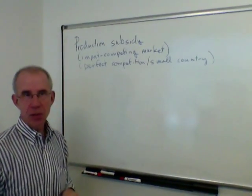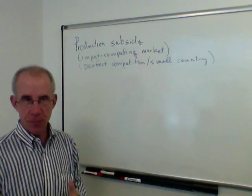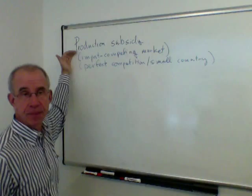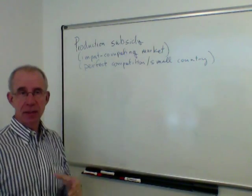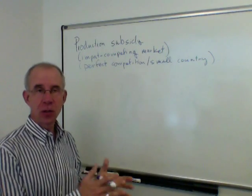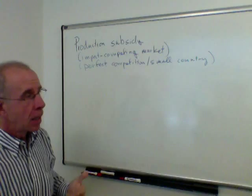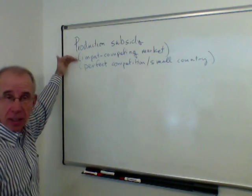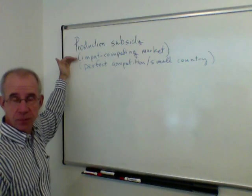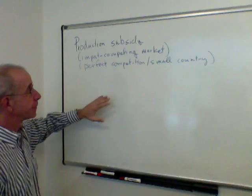Let's analyze an alternative way to help a domestic industry that's competing with cheap imports. In this instance we're going to be looking at a production subsidy — what that means is that the government will pay a set amount for every unit of domestic production. We're going to do this in an import competing market; in a later video we'll do it for an industry that is exporting and trying to sell in the world market.